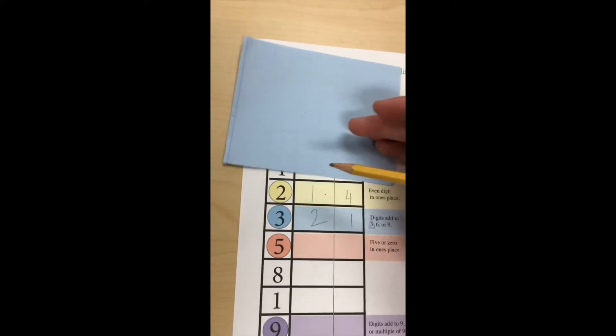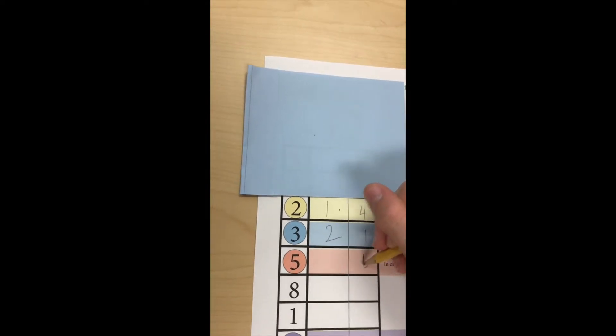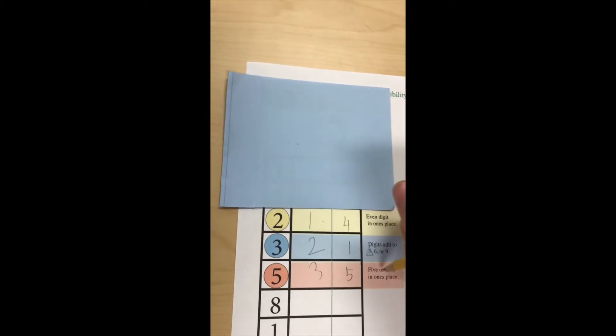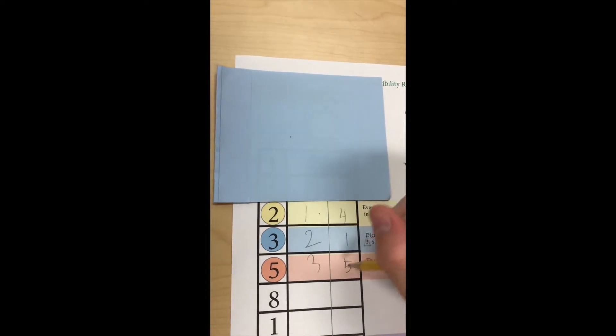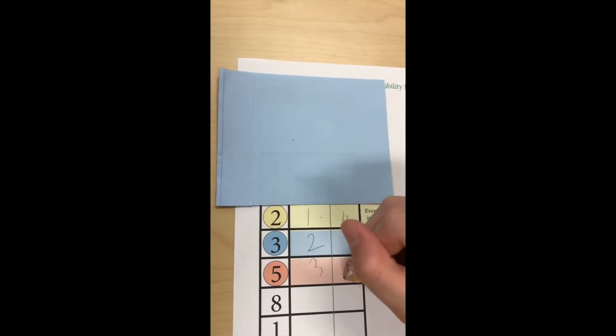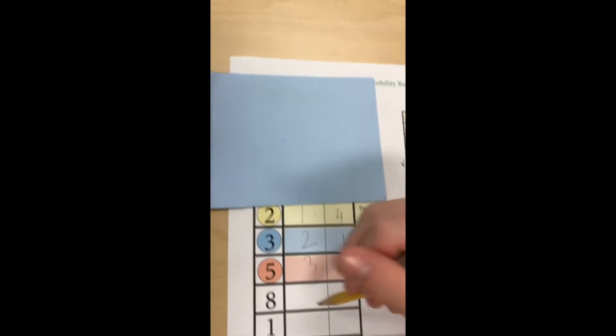All right. So now we add fourteen to twenty-one, so make this a five, and that is a three. Good. Five, four, zero in the ones place. This one is a five, so that would match up. Looks good.